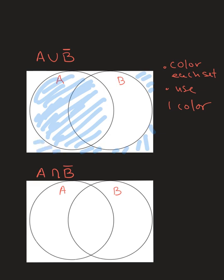Now I color all of B complement. Remember, B complement is outside of B, so I trace around the circle and go outwards. I have to make sure I go around B and not A. Trace around B and go outwards. And all that blue is the visual representation of A union B complement.